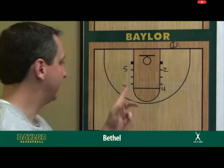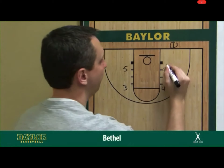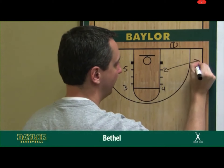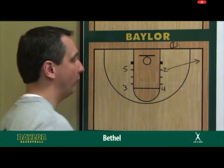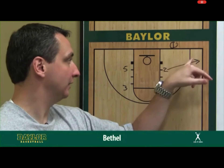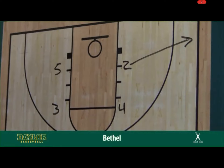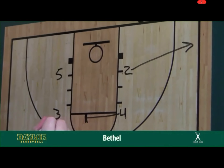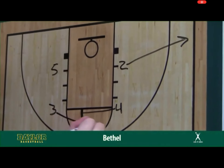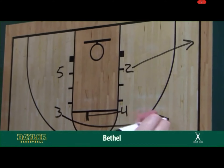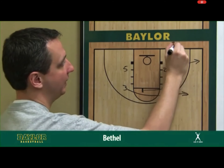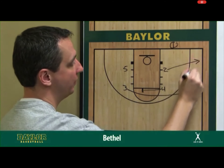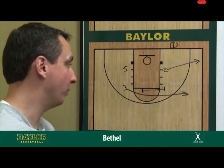The next man-to-man out-of-bounds play is what we call 'Bethel.' Again, we start in a box set. First, the two breaks to the corner. If we can catch the defense relaxing, we can get a quick pass to the two for a quick three. Once we can't get that, the four comes over and sets an elbow cross screen, bringing the three over. If we can hit one to two and two to three for a quick three, that's what we want to do.